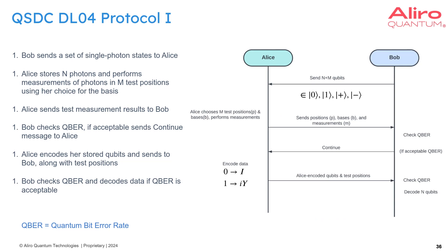The efficient protocol used entangled pairs. Another QSDC protocol, called DL04, uses single photon states. Again we're sending from Alice to Bob, but in this case Bob initiates the protocol by sending a stream of qubits encoded in different bases — either zero or one in the computational basis, or a plus or minus state in the X basis. Alice chooses some subset of these as test positions, then sends which positions she chose back to Bob along with which basis she used, so Bob can check the quantum bit error rate using her measurement values.